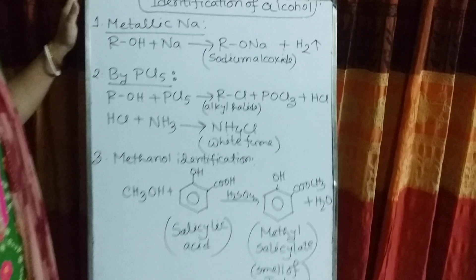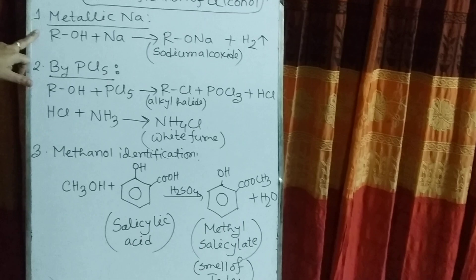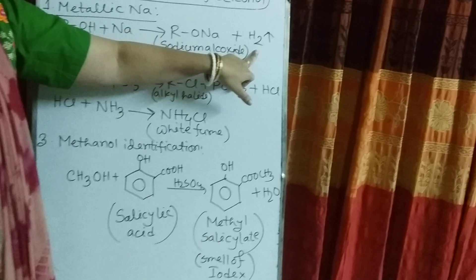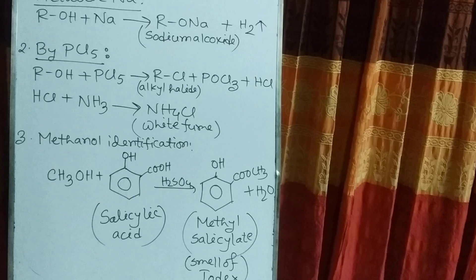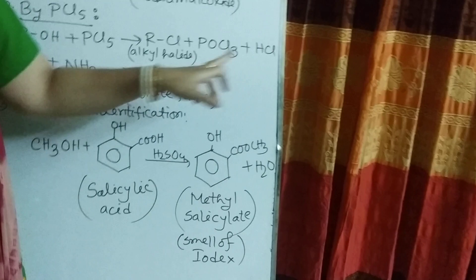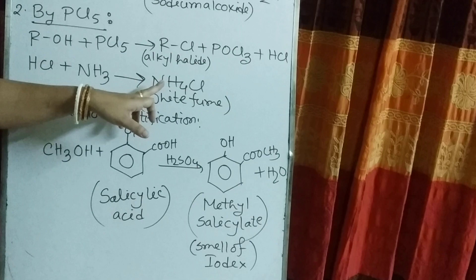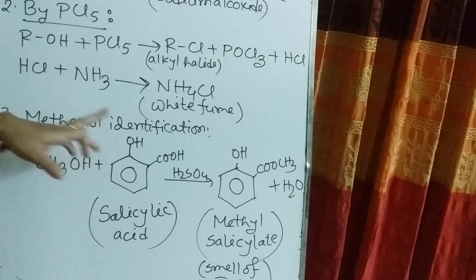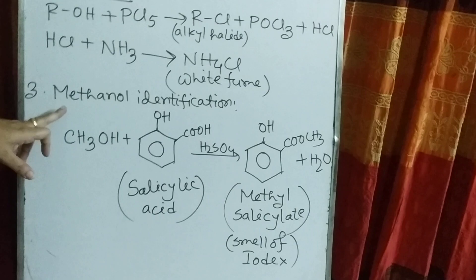Now I give you the identification of alcohol. First, by using metallic sodium — when alcohol reacts with sodium, it produces hydrogen gas, by which we can identify alcohol is present. Second, by phosphorus pentachloride — when alcohol reacts with PCl5, it produces hydrochloric acid, which reacts with ammonia and produces white fumes of ammonium chloride. By seeing this white fume, we can identify alcohol is present.